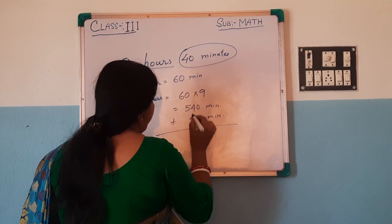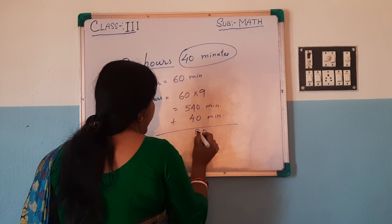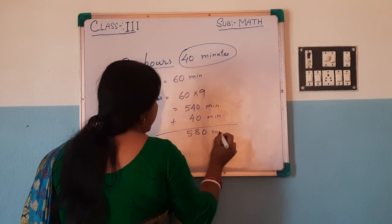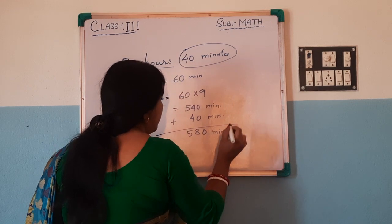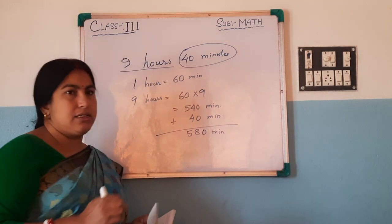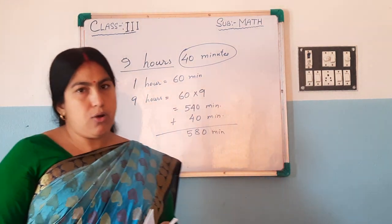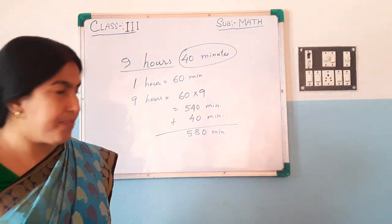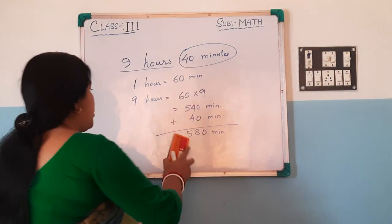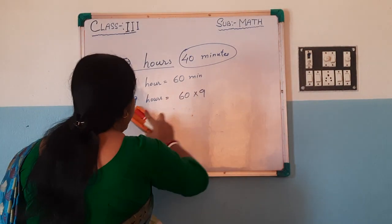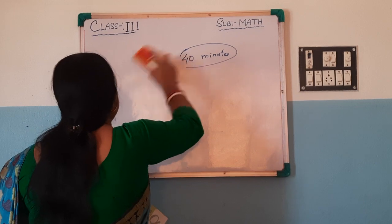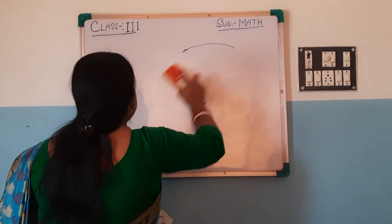0 plus 4, plus 4 is 8 — so 580 minutes. In this way, you have to complete this exercise.